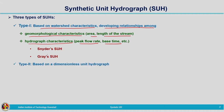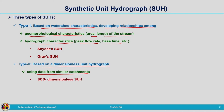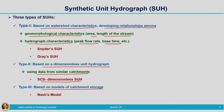Type 2 is based on dimensionless unit hydrograph, that is by using data from similar catchments. For an ungauged catchment we develop dimensionless relationships using data from a neighboring catchment for which stream flow and rainfall data are available. The example for Type 2 is the SCS dimensionless synthetic unit hydrograph. Type 3 is based on models of catchment storage. Whenever a storm occurs, different storage components need to be satisfied before runoff reaches the outlet. Examples related to Type 3 are Nash model and Clark's model.